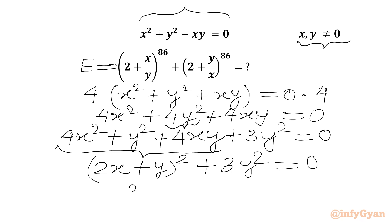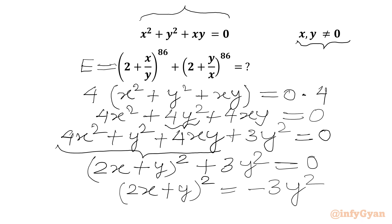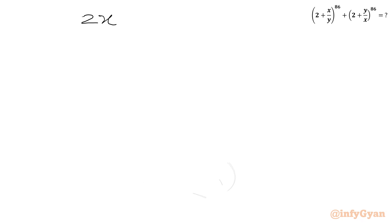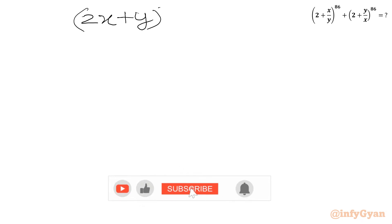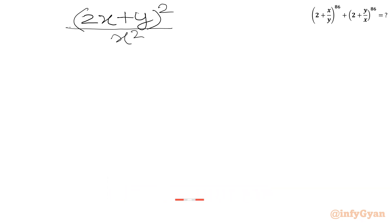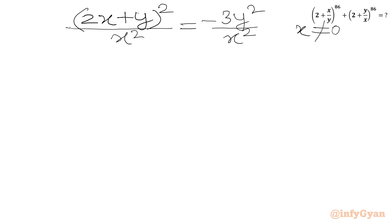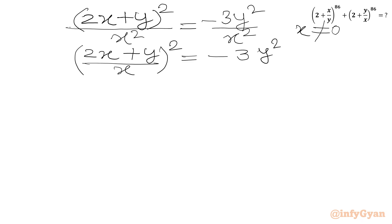So we can write (2x + y)² = −3y². Now we are going to divide both sides by x². So we write (2x + y)² / x² = −3y²/x², which gives us (2 + y/x)² = −3(y/x)².